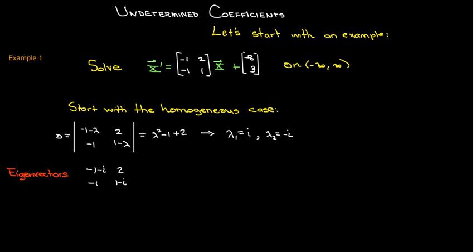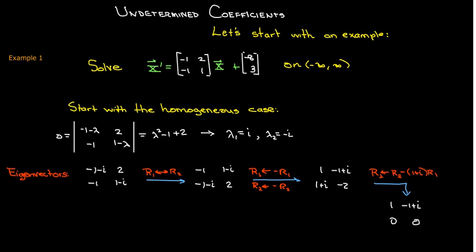So let's find the eigenvector corresponding to i and we're going to use our elementary row transformations. First thing I'm going to do is I don't want to deal with the complex number in the first row and column so I'll swap the first and second columns. Then I'd like to get rid of all these negative signs so I'm going to multiply the top and bottom by negative 1, and then finally I'm going to eliminate this 1 plus i in the second row and I'm left with a row of zeros as we expect.